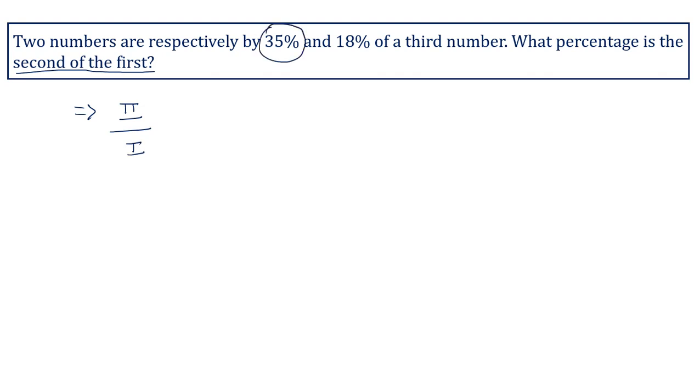The two given values are 35% and 18%, that is x% equal to 35% is the first number and y% is equal to 18% is the second number. These two numbers are of the third number.